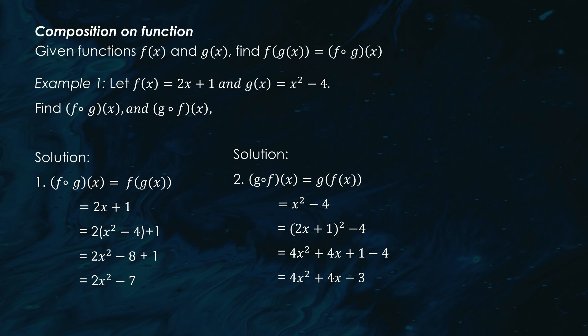For g ∘ f(x), we substitute f(x) into g(x): g(f(x)) = (2x + 1)² − 4. Expanding this, we get 4x² + 4x + 1 − 4. Simplifying, we get 4x² + 4x − 3. Therefore, g ∘ f(x) = 4x² + 4x − 3.